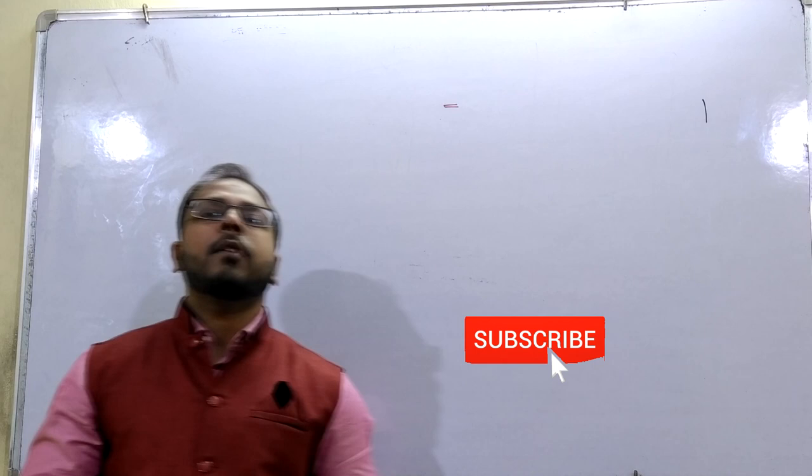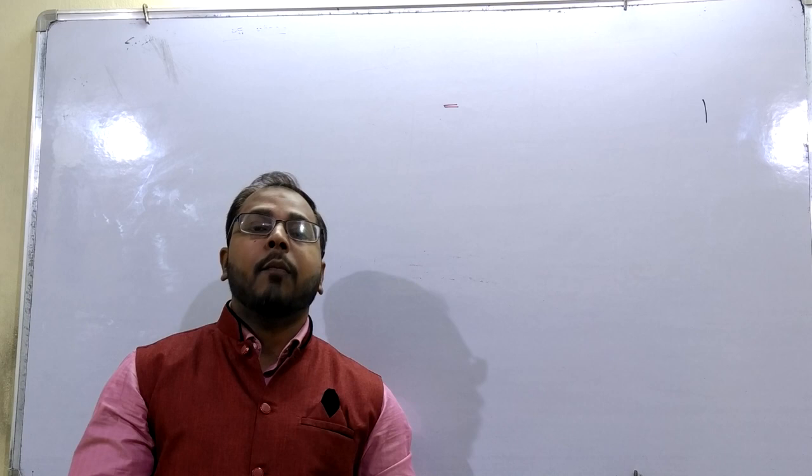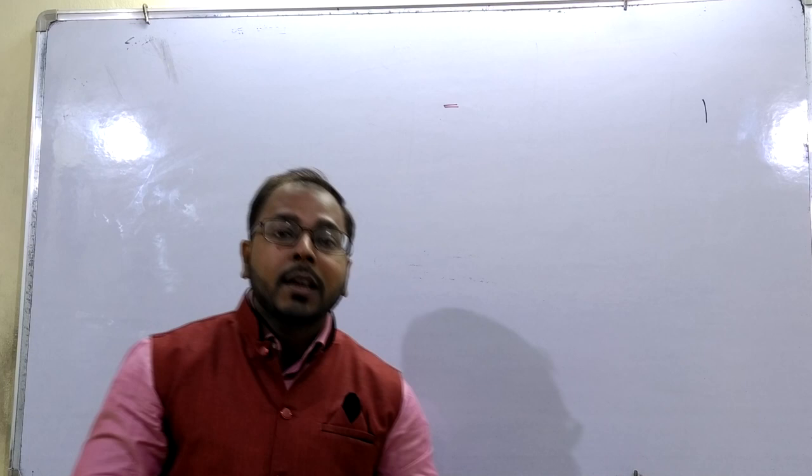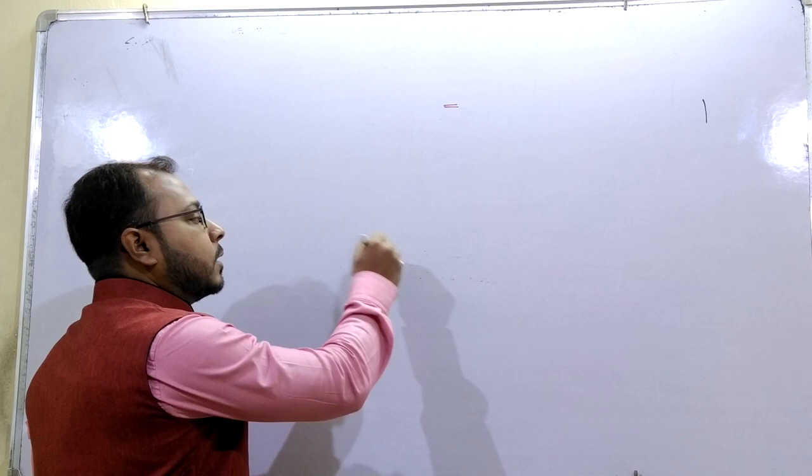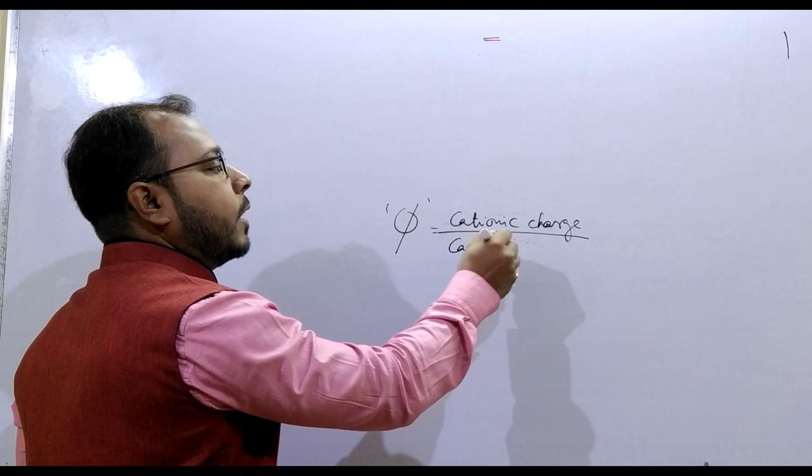Fajans rule is one parameter or one conception where we can get some idea about the covalent nature of ionic compounds. And that parameter is known as the ionic potential. Here the parameter or the term phi, that is cationic charge divided by cationic radius.